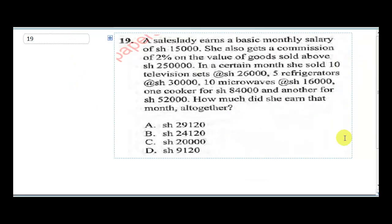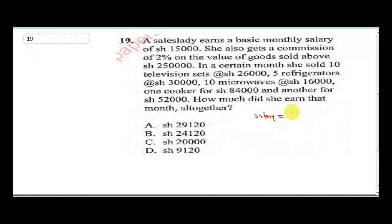Question 19 says: a sales lady earns a basic monthly salary of 15,000 shillings. She also gets a commission of two percent on the value of goods sold above 250,000 shillings. Commission is an extra benefit you get when you do extra work — she gets 2% of whatever she sells over 250,000.